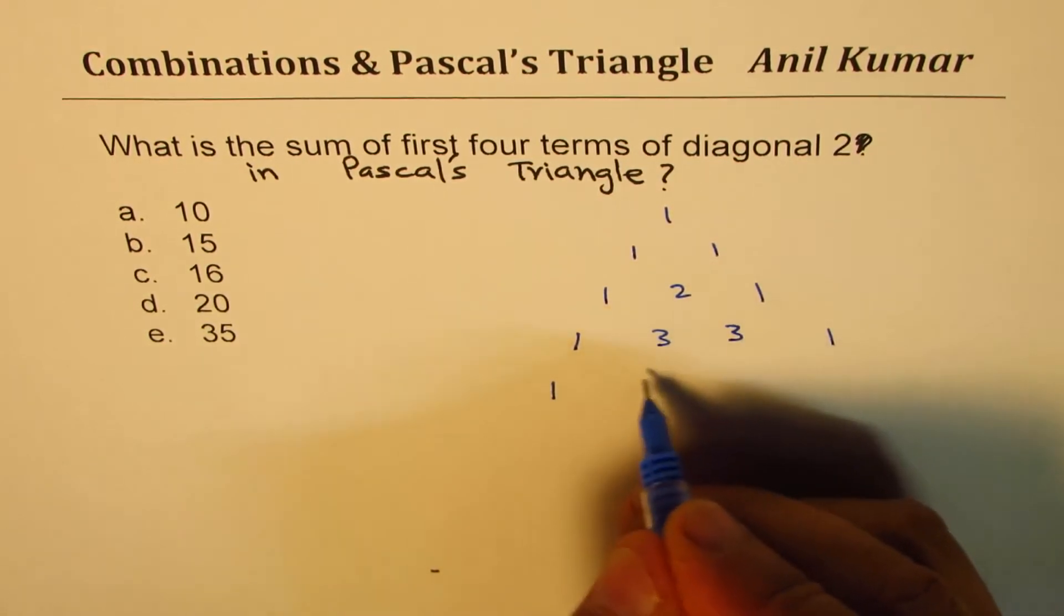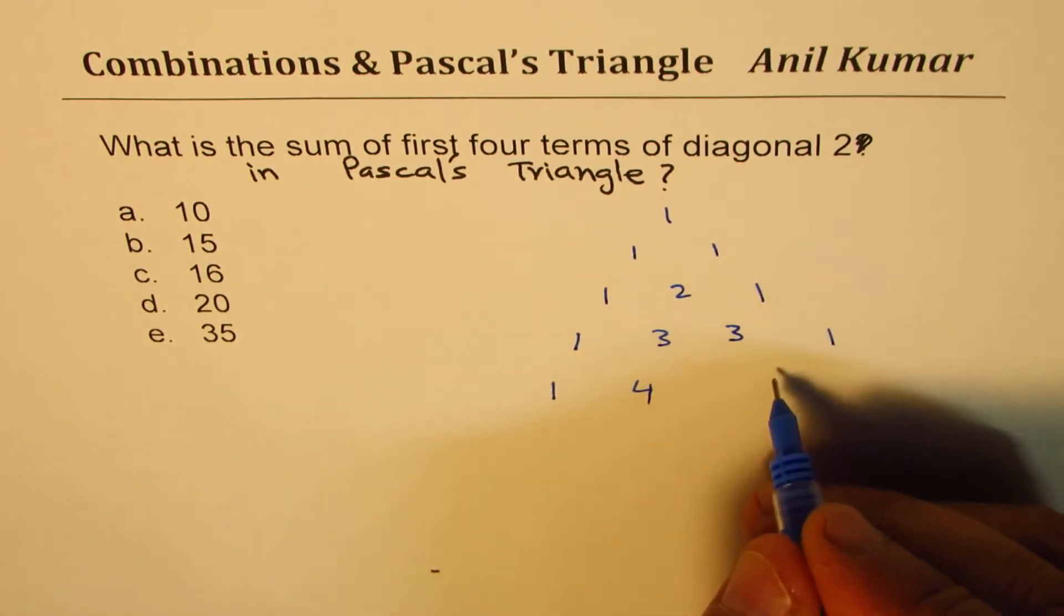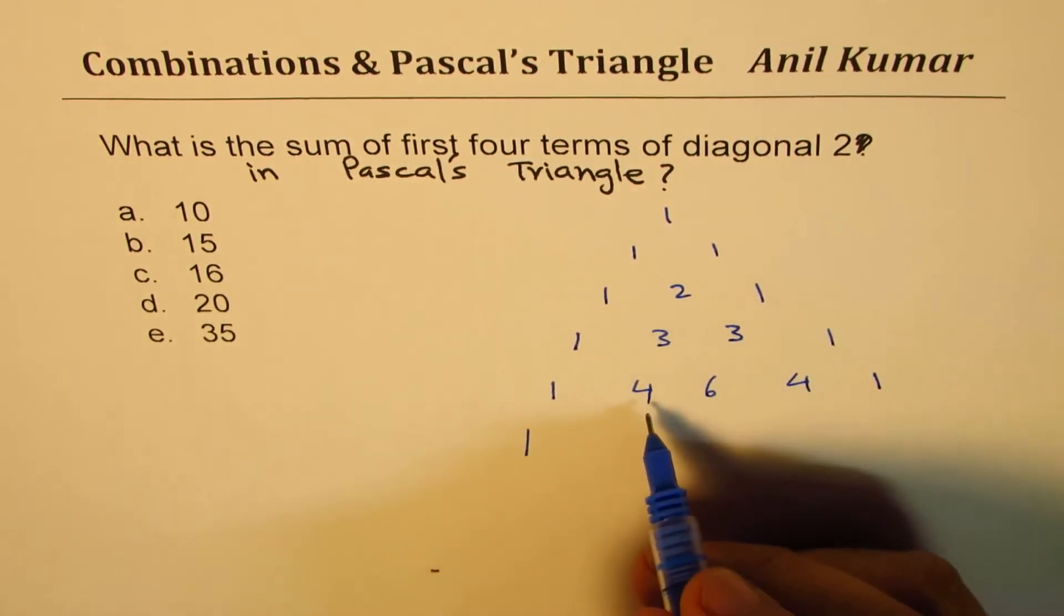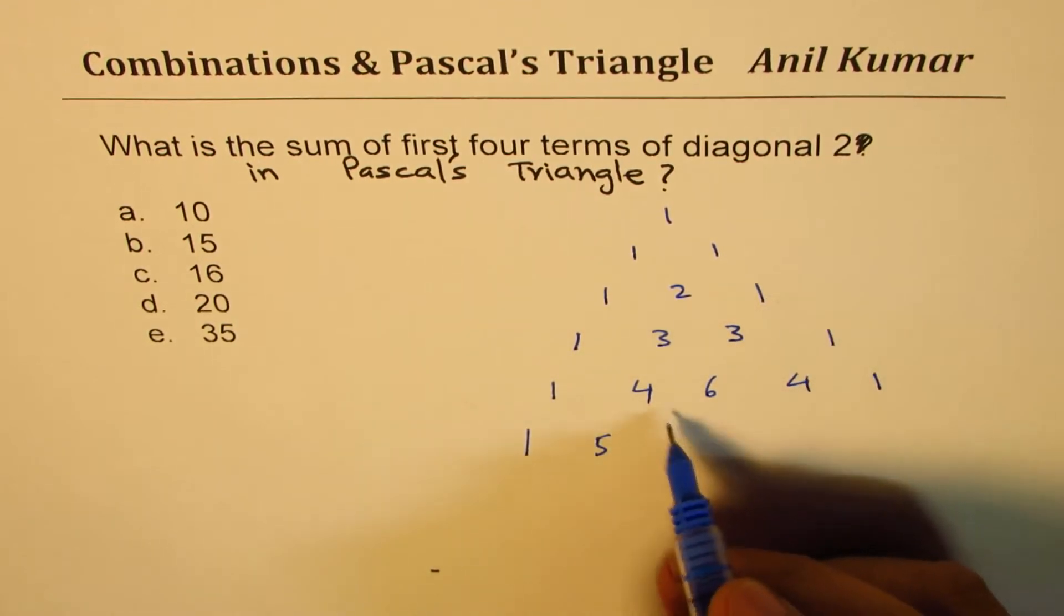And then it's one, and then three plus - it's actually better to draw lines - four, and then six, three plus three, and this is four, and that goes one. And then we move further down, so it is four plus one, five, and this diagonal, six plus four, ten.